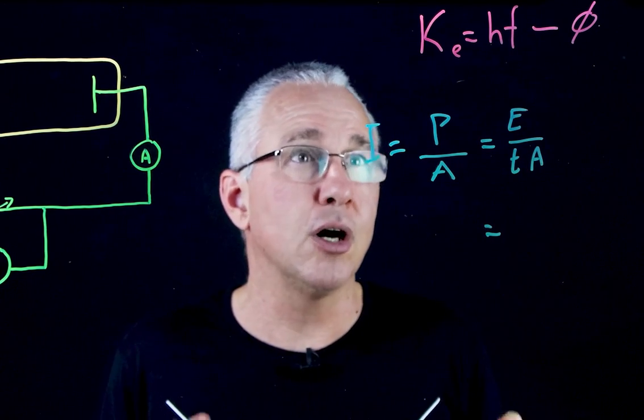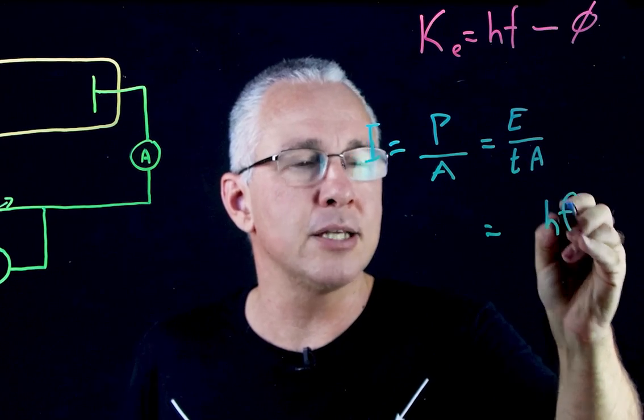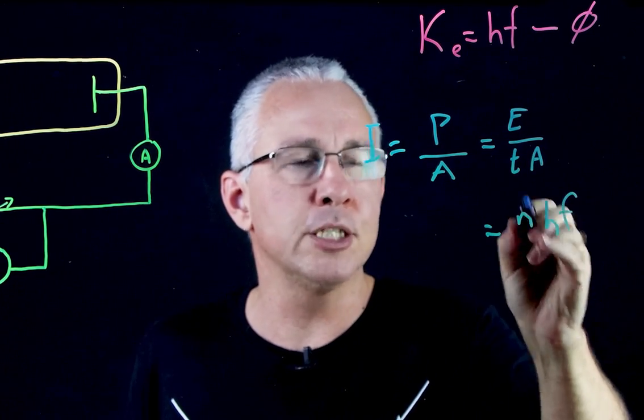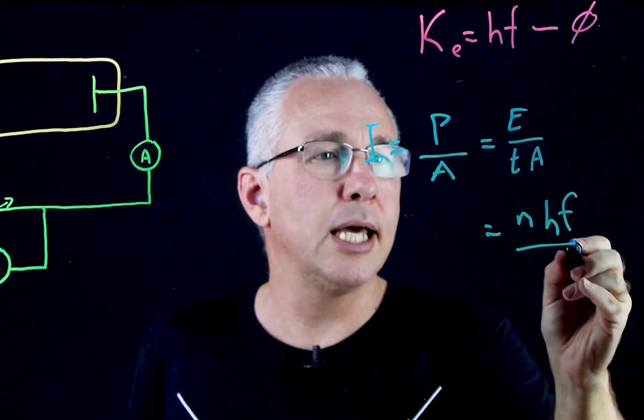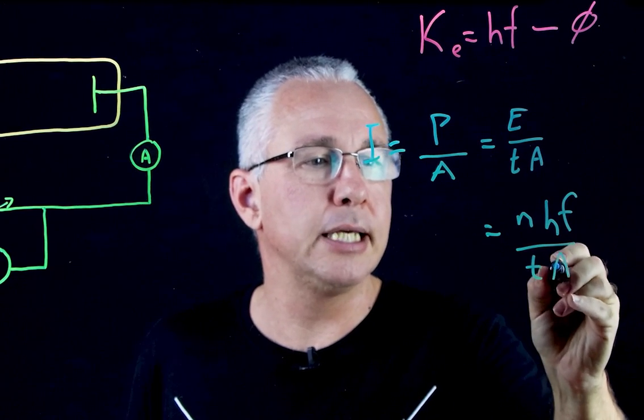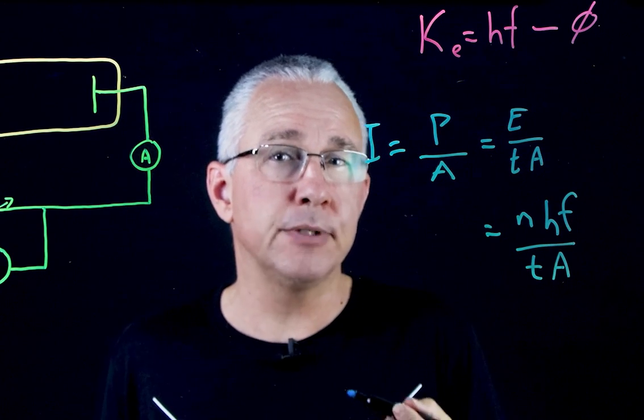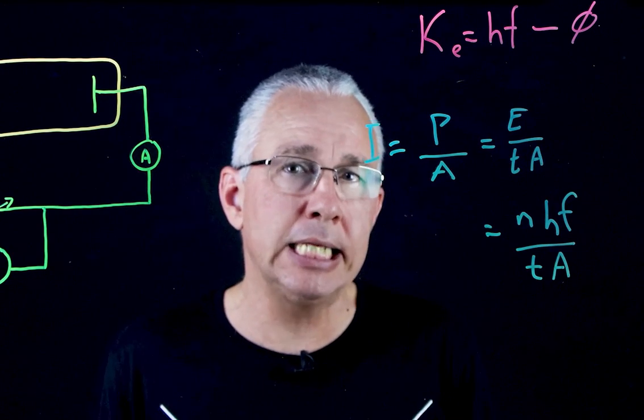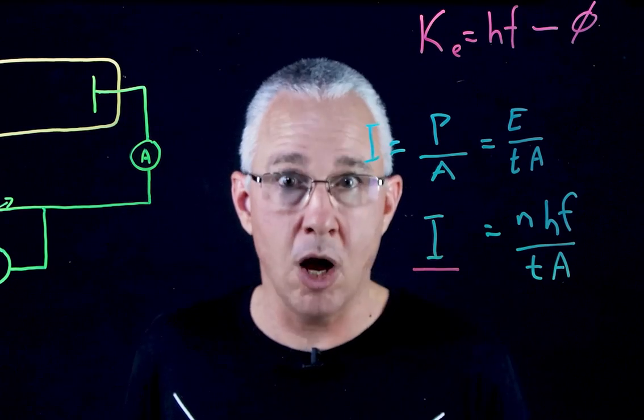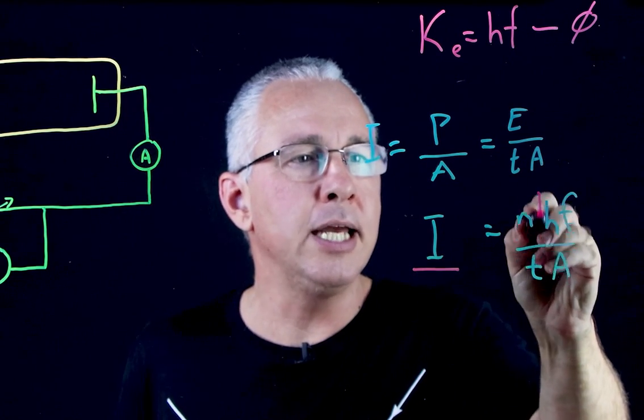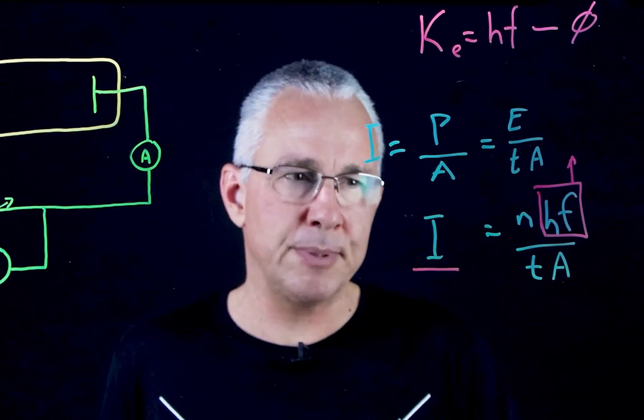But where are we getting our energy from? Well, the energy is the energy of my photons, but it's not just hf, that's one photon. So we have to multiply this by the number of photons that actually strike the metal, and of course then we divide that by T and A. Now remember what I said: we are increasing the frequency but we're maintaining the intensity. So the intensity has to remain constant, but we are increasing this value over here.